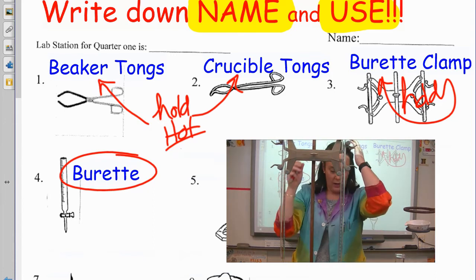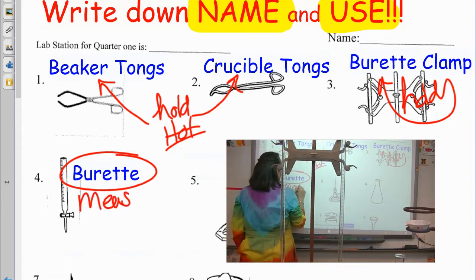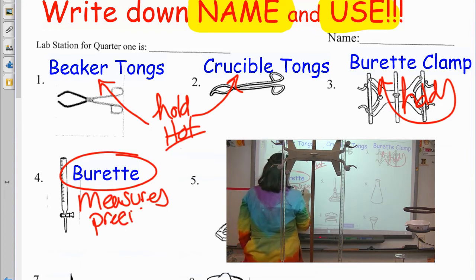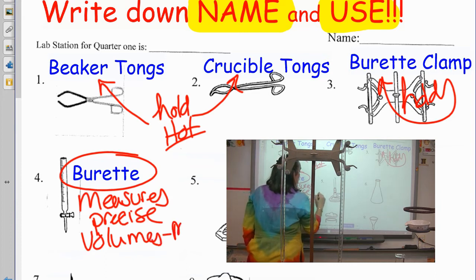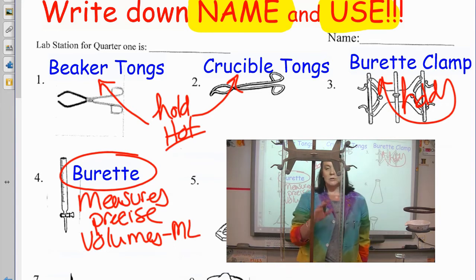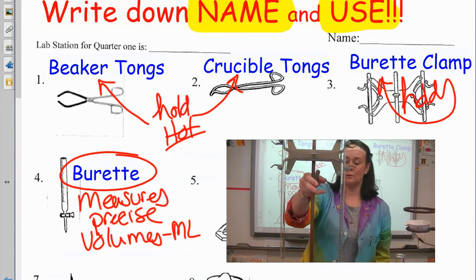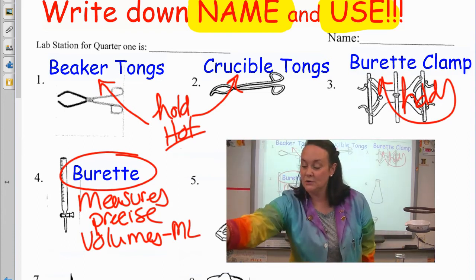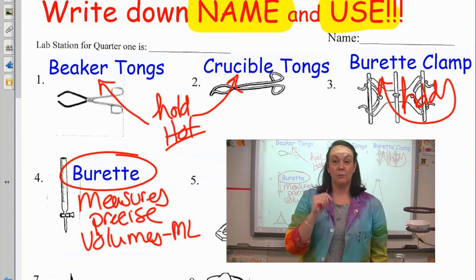So what would I write for a burette? I would say measures precise volumes. The unit for volume is milliliters. We will get to that more here soon. But so it measures very, very precise. Like I said, we'll use this more when we're doing stoichiometry, titrations, things like that. So the clamp holds the burette and the burette is used to measure very precise amounts of volume of liquids.